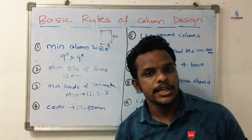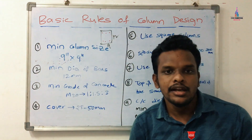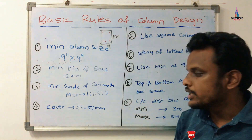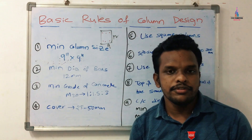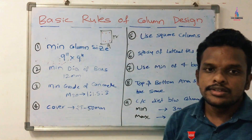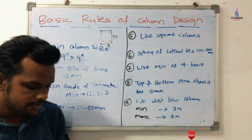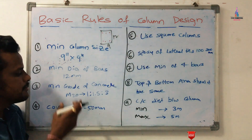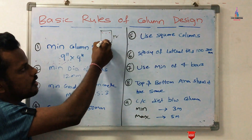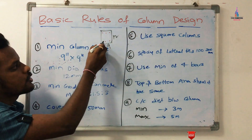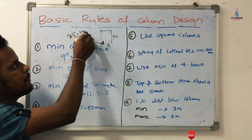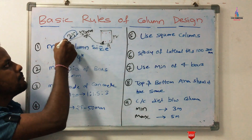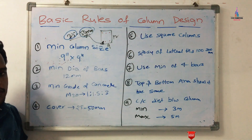The third rule: the minimum grade of concrete should be M20. This is one of the most important points for designing a building. The minimum grade of concrete should be M20 or greater, with a mix proportion of 1:1.5:3 for M20 grade concrete. The fourth rule is cover — the column cover should be approximately 25 to 50 mm, where 25 mm is the minimum and 50 mm is the maximum.